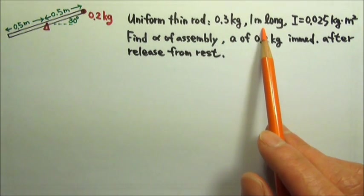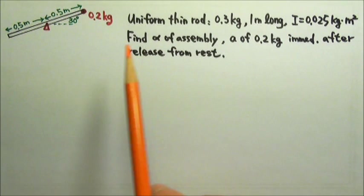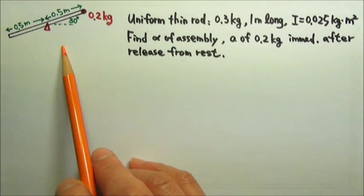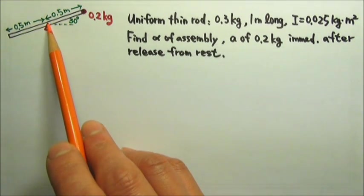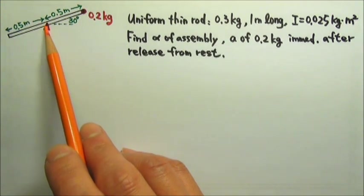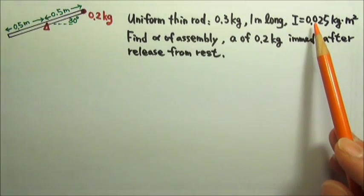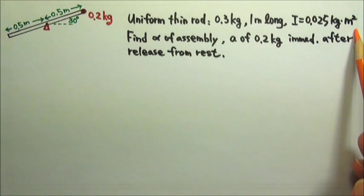A 0.3 kg, 1 meter long uniform rod is free to rotate in the vertical plane about a frictionless axis that goes through the center of the rod. The rod has a rotational inertia of 0.025 kg·m².